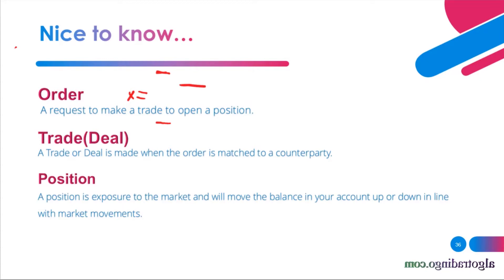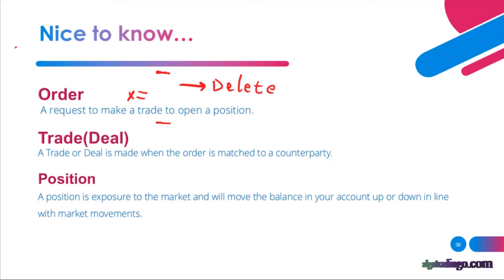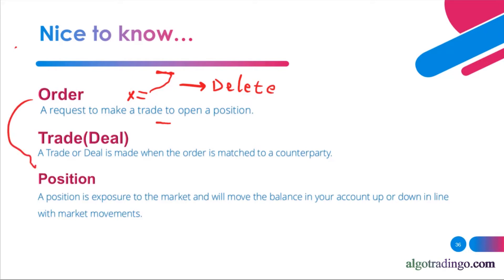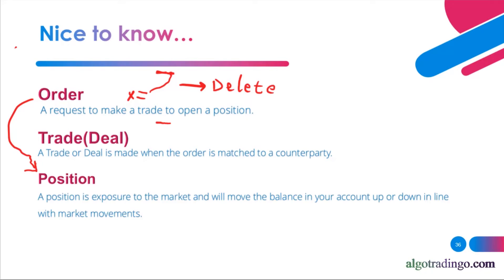These orders can be deleted or expire at a specified time. But if the market hits that price — for example, if the market comes up and hits that price — the order will change to a position. There is no order available at that moment; you will have a position. The name changes to position, and the position can only be closed; there is no option for deleting anymore.